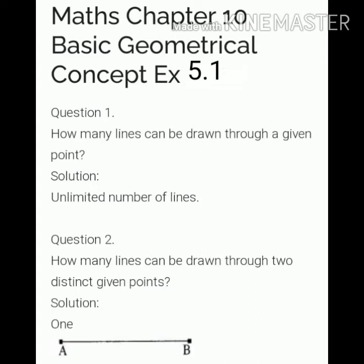Question number second is, how many lines can be drawn through two distinct given points? It means from two different points how many lines can be drawn. We already discussed that when two points are given, only one line can be drawn.